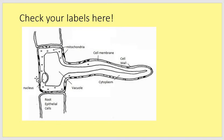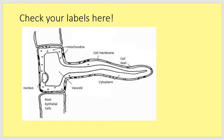Here are your labels — did you get them all? Your largest organelle should be the nucleus. You have a vacuole that extends all the way down almost to the tip of the cell. You have the cell wall on the outside, the cell membrane as the inner layer, and cytoplasm inside. The little dots are the many mitochondria. These surrounding ordinary cells are called root epithelial cells, and the ones that poke out are the root hair cells.